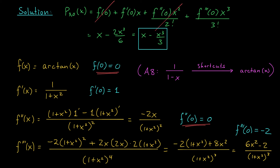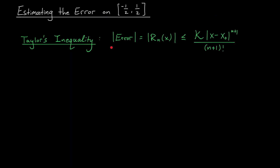The next step is to understand the error in this approximation using Taylor's inequality. Taylor's inequality tells us the magnitude of our error is no more than a constant k times the absolute value of x minus the center x-naught, raised to the power n plus 1, divided by (n plus 1) factorial. Here n equals 3, so n plus 1 is 4, and the center is 0. So the error is bounded above by k times x to the 4 divided by 4 factorial. We can drop the absolute value since anything to the 4th power is positive.